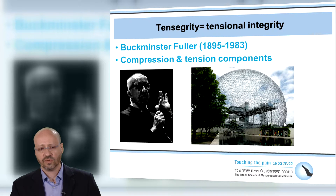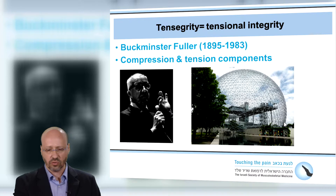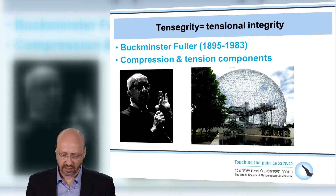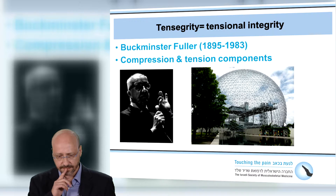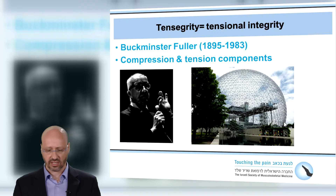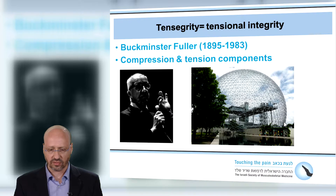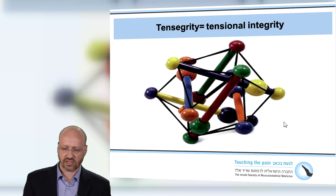His name is Buckminster Fuller. Buckminster Fuller was an American engineer. He was the one to invent the geodesic dome, as you can see here on the right side of the picture — this is taken from Montreal, Canada. He was the one to first describe the idea of tensegrity. Tensegrity is a mixture of two words: tensional integrity. He coined this term for describing a model based on compression and tension components.